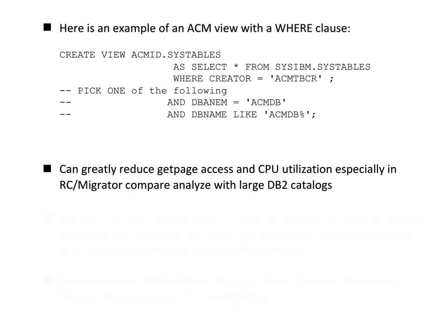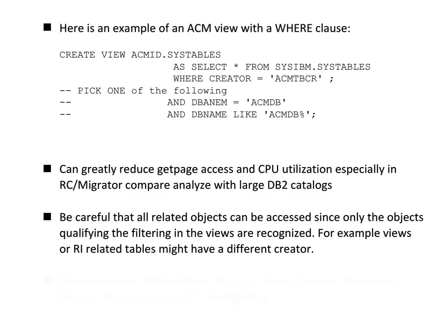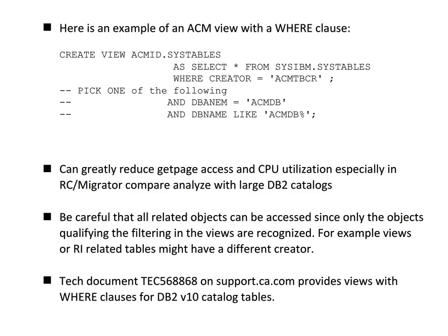The use of views with WHERE clauses can have a significant impact on performance. This is especially the case when analyzing RC Migrator Compare strategies, where memory requirements could be a problem. However, you need to carefully consider how the views are created to avoid problems when only accessing a subset of the catalog. On the CA support site you can find a document with all views for DB2 version 10, ready for your customization.